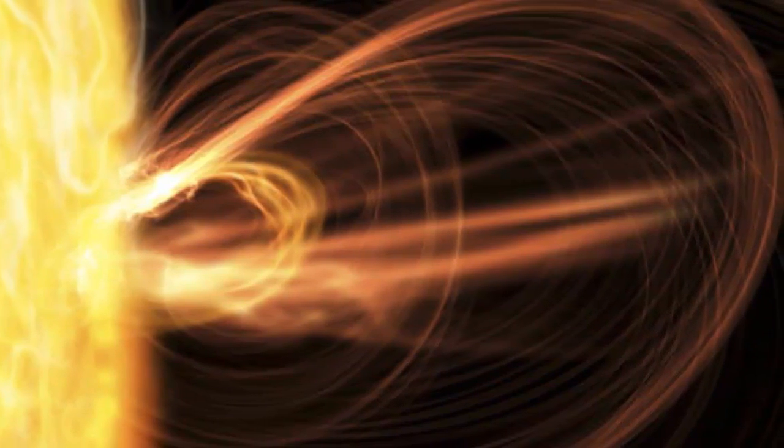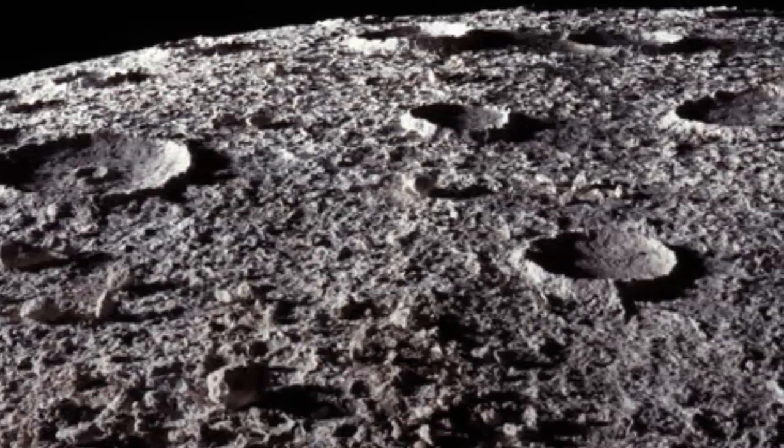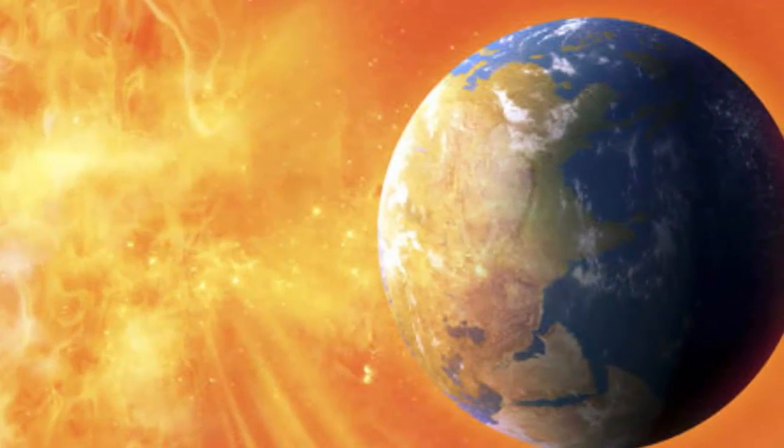When scientists analyzed lunar rocks in 2006, they found that oxygen levels did not match up to what they should be for a celestial body with no atmosphere and no signs of life. However, the discovery that it picks up oxygen ions from Earth goes towards explaining the imbalance.